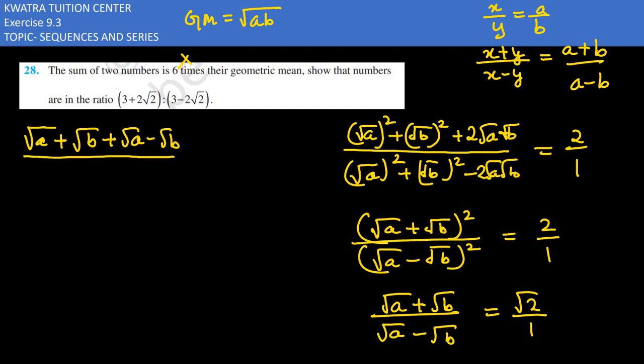The next step: (√a + √b + √a - √b)/(√a + √b - √a + √b). Right side (√2 + 1) + (√2 - 1) and then (√2 + 1) - (√2 - 1) = (√2 + 1)/(√2 - 1).